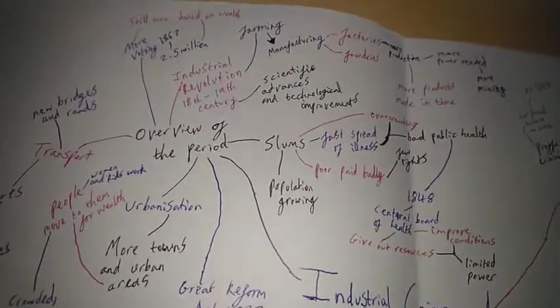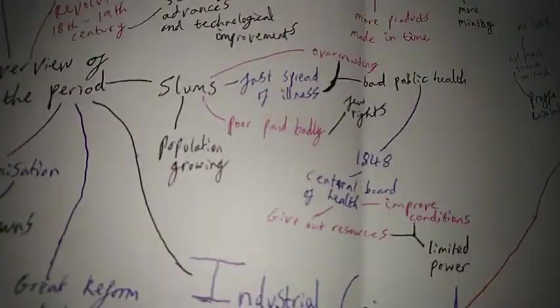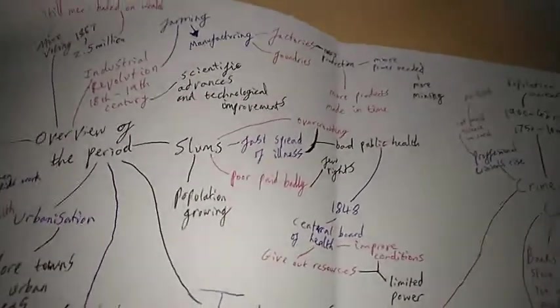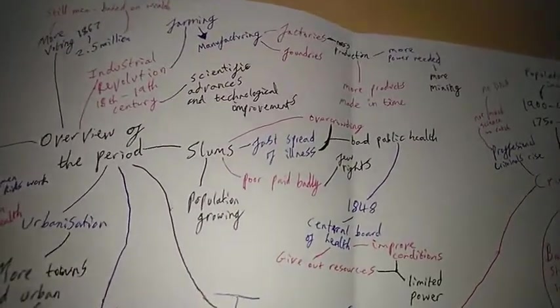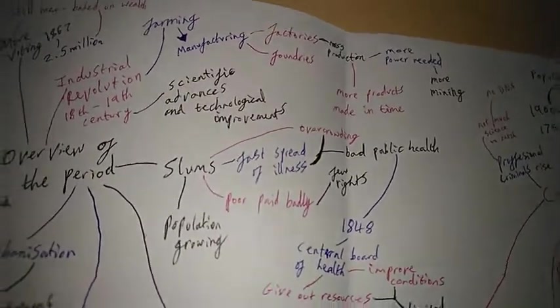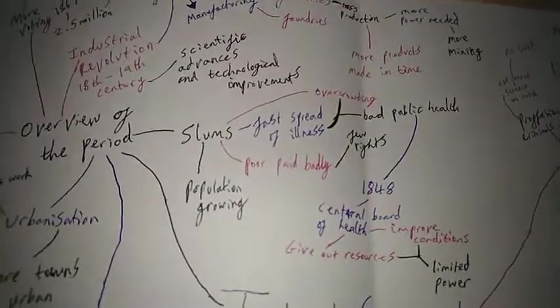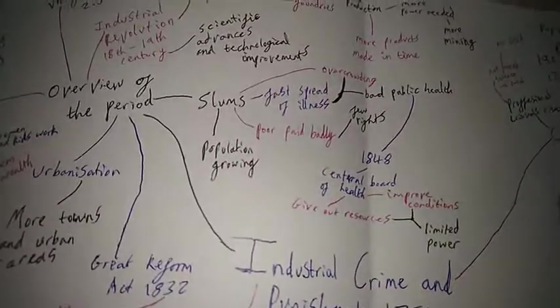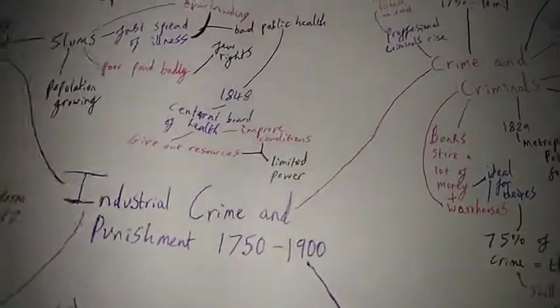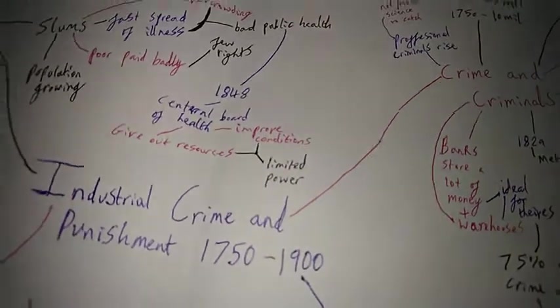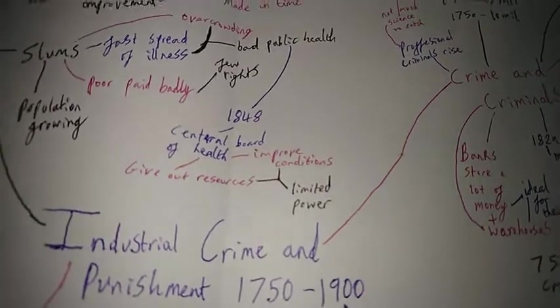The people who we considered peasants would now be living in slums as the population was growing. There were loads of people all tightly packed into one place. There was a fast spread of illness because of overcrowding and those things led to bad public health. The poor people were paid badly and they had few rights. In 1848 they set up the Central Board of Health to improve conditions and give out resources, however this organisation had limited power in this period.